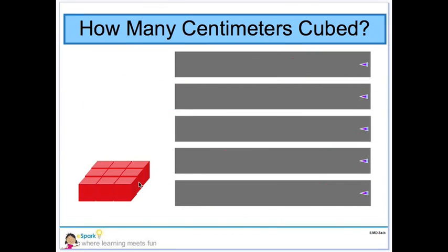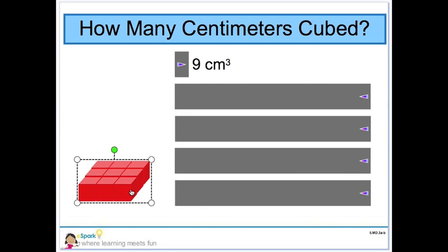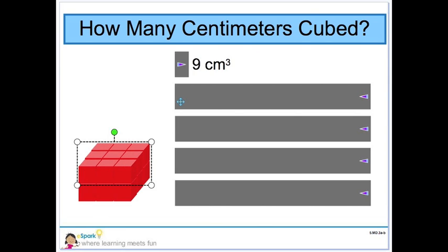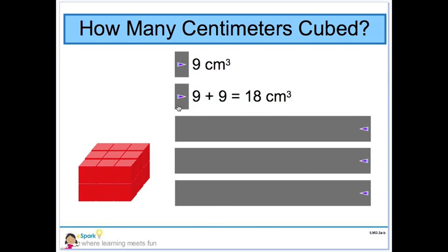Here is another layer of 9 cubic units. And you can see when we write it in a math equation, we write centimeters with an exponent of 3 to indicate that we are talking about a measurement of 3 dimensions. What happens when we add another layer?